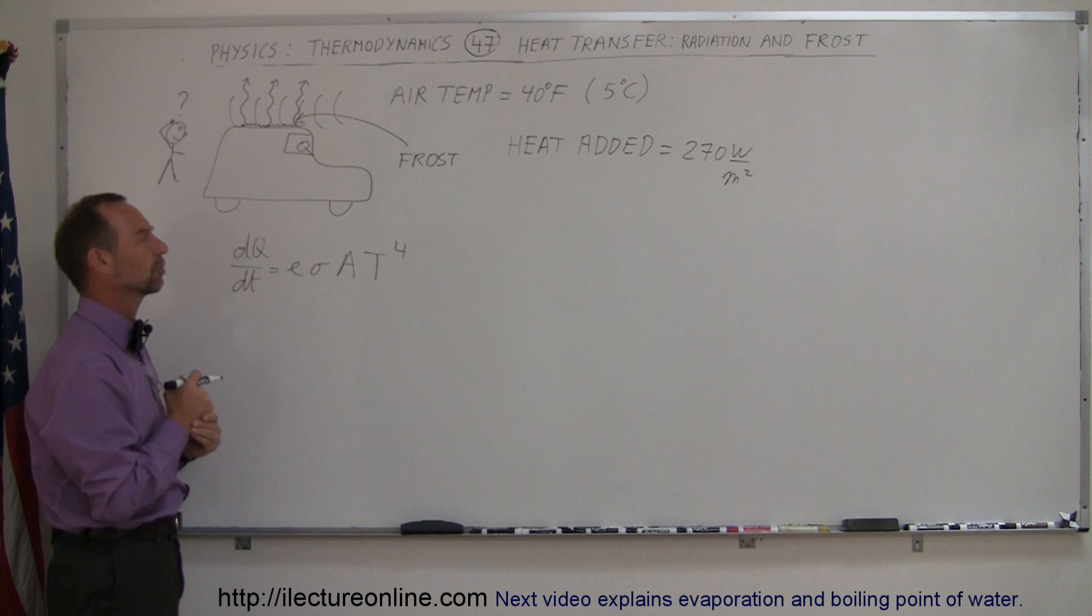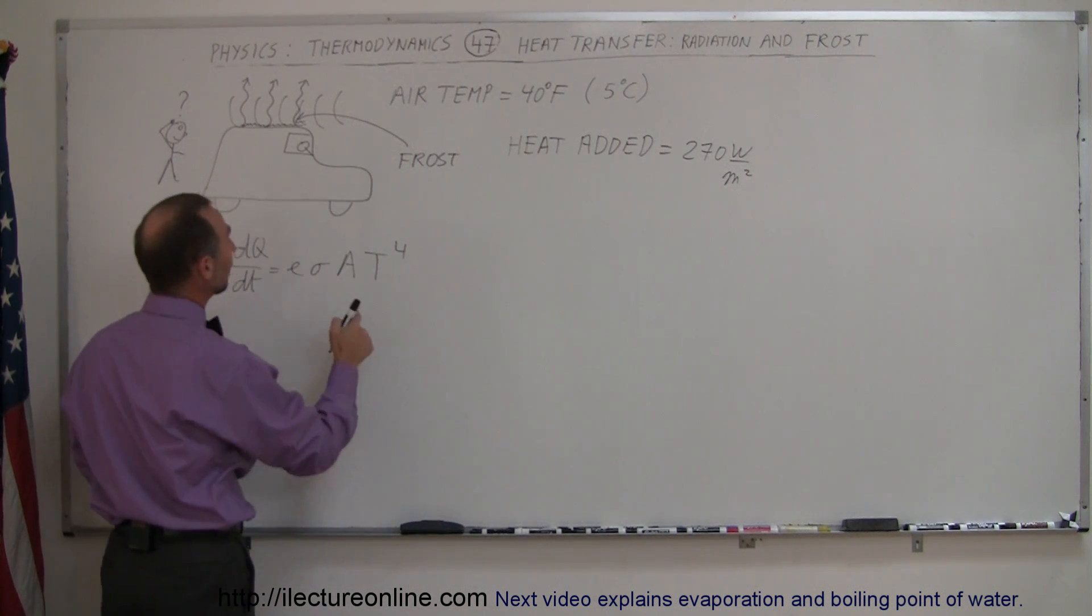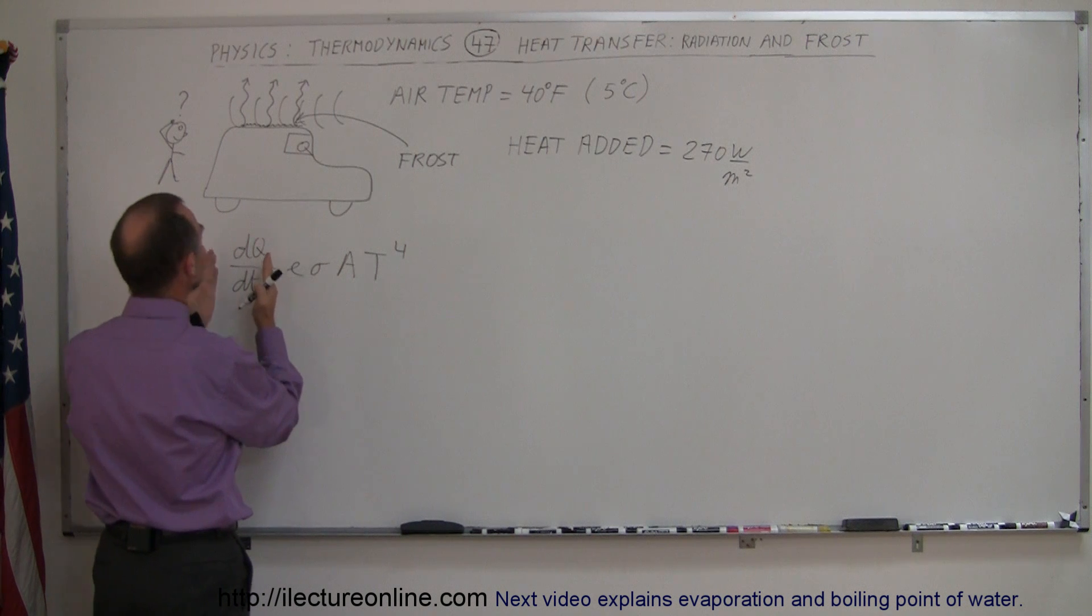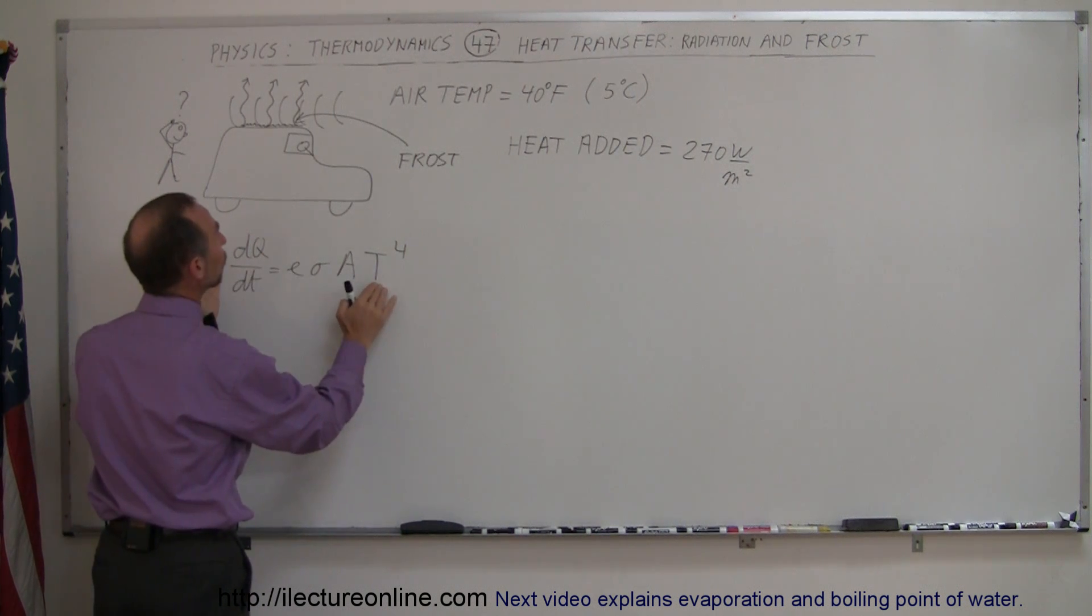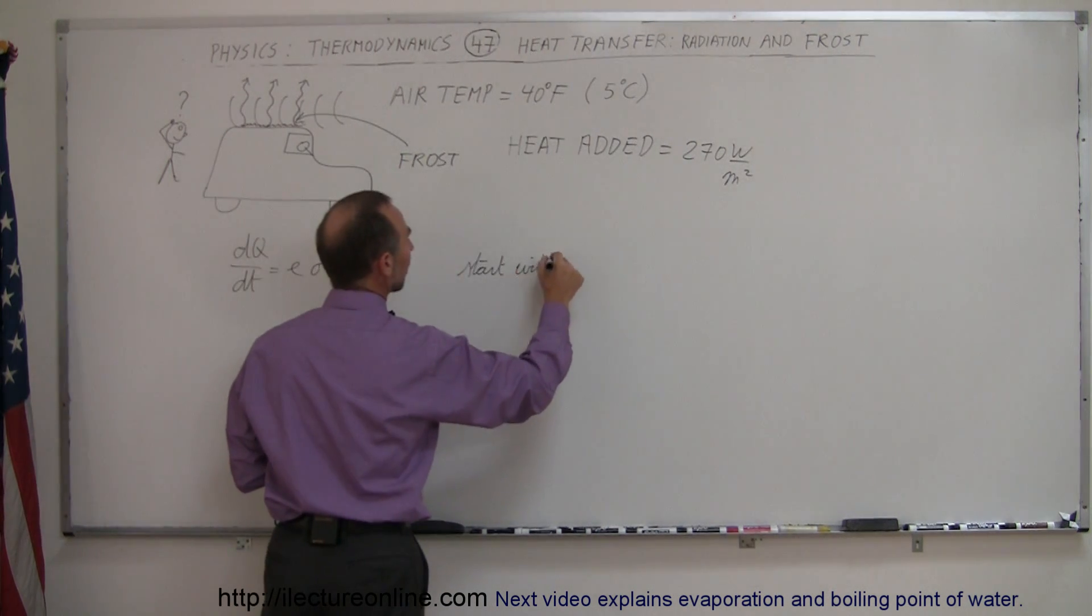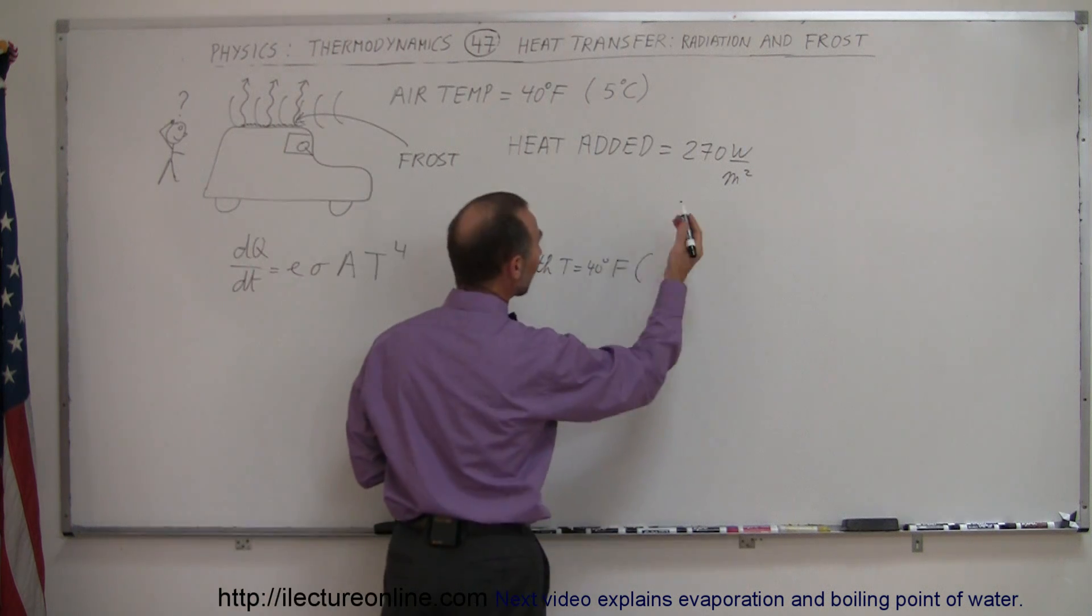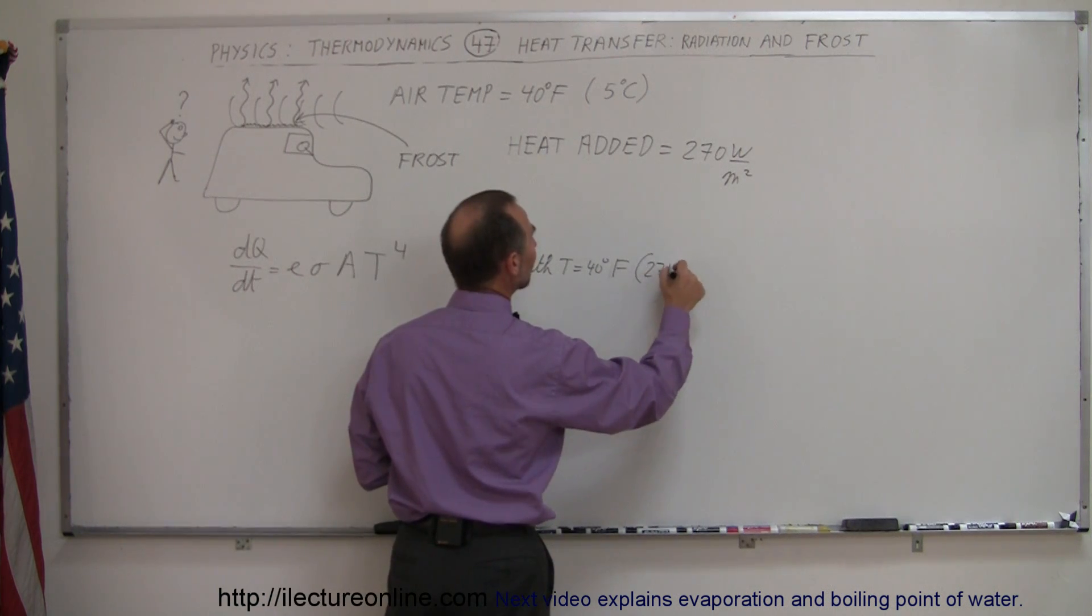So the question is, what will be the temperature of the car? Well, the first thing we're going to do is calculate the dQ/dt with the temperature at 40 degrees Fahrenheit. So start with T equals 40 degrees Fahrenheit, which is about 5 centigrade, which is about 278 Kelvin.